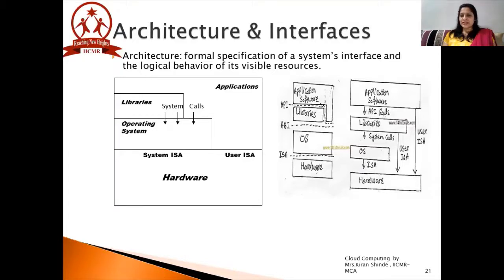Moving ahead, you can see system calls are mentioned here. System calls are actually used to establish the communication between the operating system and the system libraries. And then on top of the libraries, you can see the API — the application programming interface — which is essential to establish the communication between the application software and the libraries. So why are we discussing all these interfaces? Because depending on these interfaces, virtual machines are created and utilized. These interfaces are very important to understand.